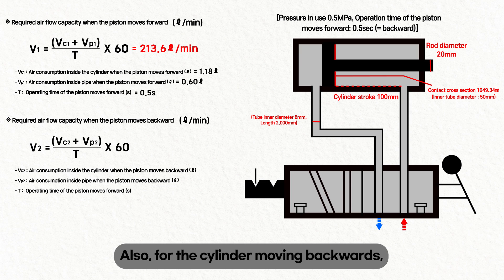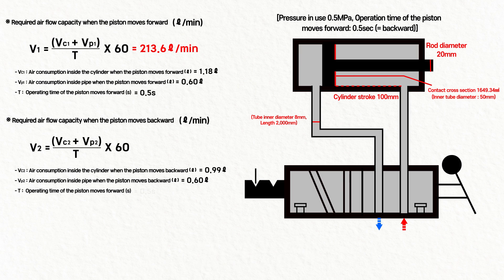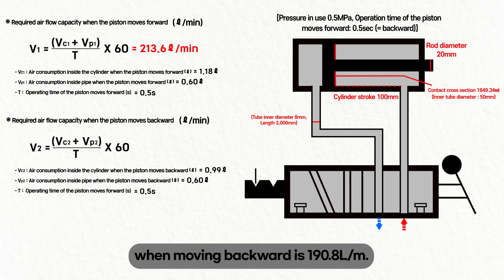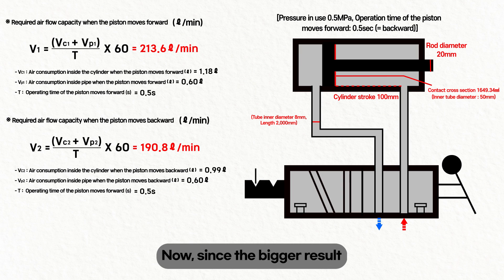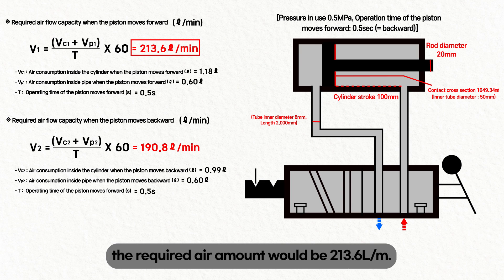For the cylinder moving backward, inputting 0.99 liters of air consumption, 0.6 liters in the pipe, and 0.5 seconds for the required time gives 190.8 liters per minute. Since the bigger result is the cylinder's required air amount, the required air amount is 213.6 liters per minute. In pneumatic systems, the double-acting cylinder's required air amount is generally similar in both directions, so using the forward-stroke value for convenience is acceptable.